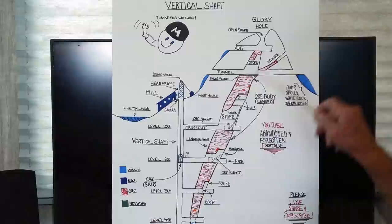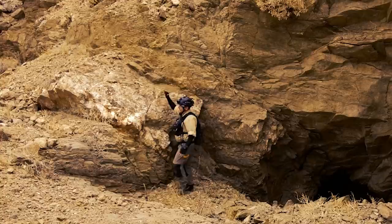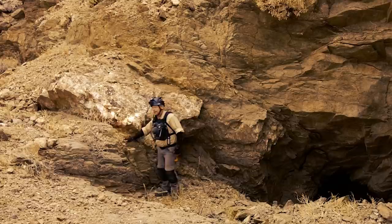The vertical shaft. So let's start. This is an ore body right there. This is your foot wall, and this right here is your hanging wall.